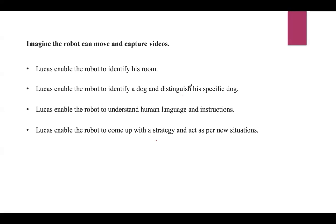Lucas enabled the robot to identify a dog and distinguish his specific dog. After that, Lucas enabled the robot to understand human language as well as instructions given by humans. Then Lucas enabled the robot to come up with a strategy and act as per new situations. Just like how he applied some strategy before and acted according to the situation, he wants the robot to also come up with a strategy as well as act as per the situation.